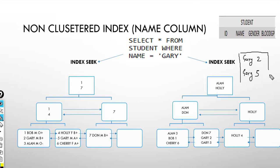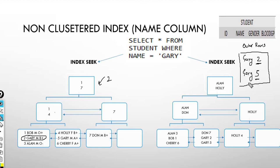Consider these two values as the outer rows or outer records. This ID number two from the outer record will be seeked in the clustered index — it will go to the left-hand side, two is less than four so it goes left again, and at the leaf level you get the details of that Gary. Then SQL Server will search for the next record, which is record number five from the outer table. Using this value, a few more searches lead to the desired record via clustered index seek.